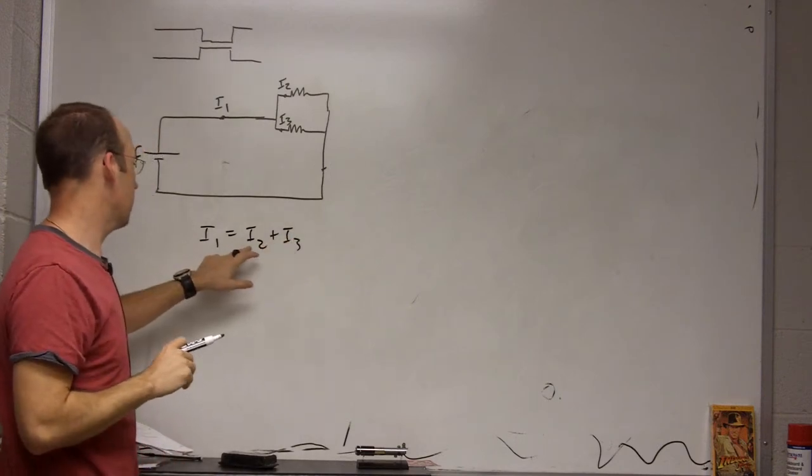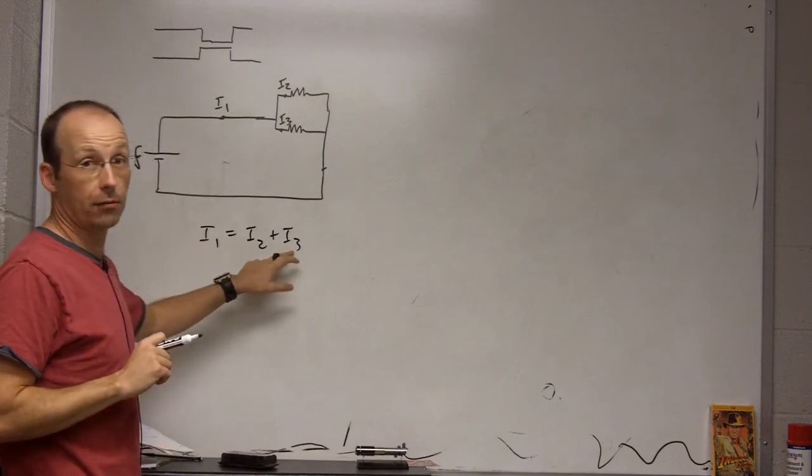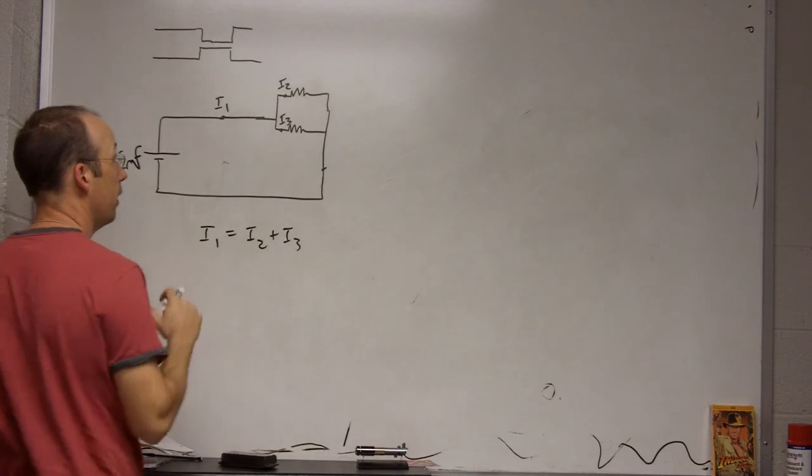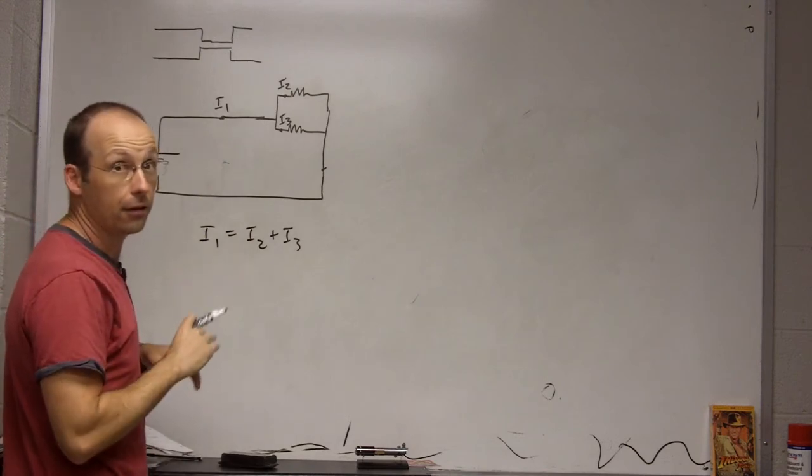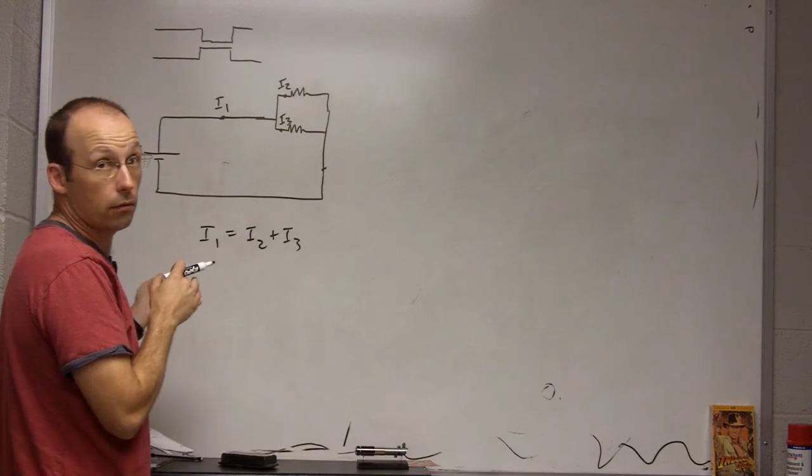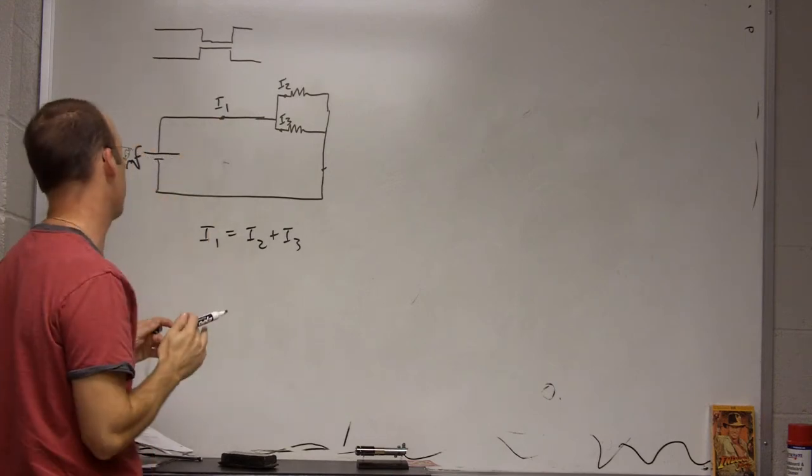So, that means that the current in two has to be less than one, and the current in three has to be less than one. And also, since this is symmetrical, the current in two and three has to be the same as each other. But they're both less than wire one. That was the first part.